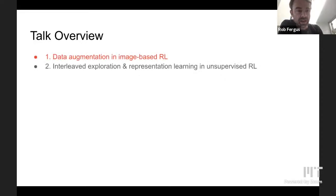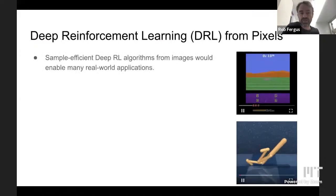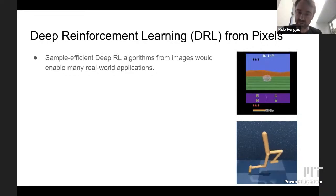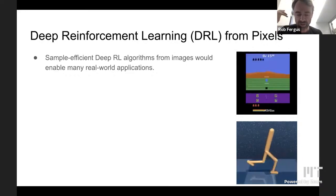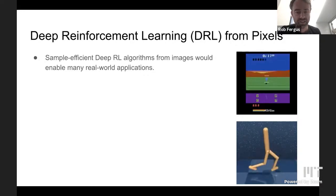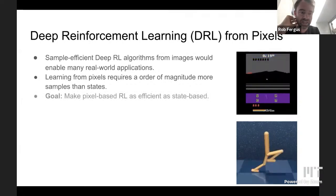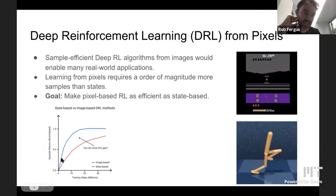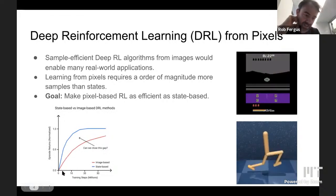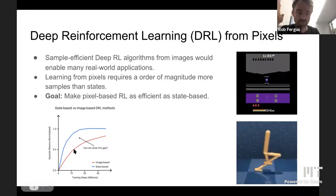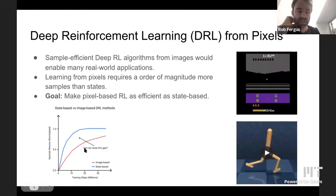One of the big challenges with employing reinforcement learning in the real world is that for most settings we would consider, being able to do it from pixels would massively simplify things. At the moment, a lot of RL results and algorithms assume you have access to internal state, and in many real robotic settings that's not the case. Unfortunately, when we try to learn directly from pixels, it's not very efficient. There's a big discrepancy in performance as a function of training steps: state-based training is much quicker than learning from pixels directly. The first part of this talk is about trying to close this gap and make pixel-based RL as efficient as state-based learning.